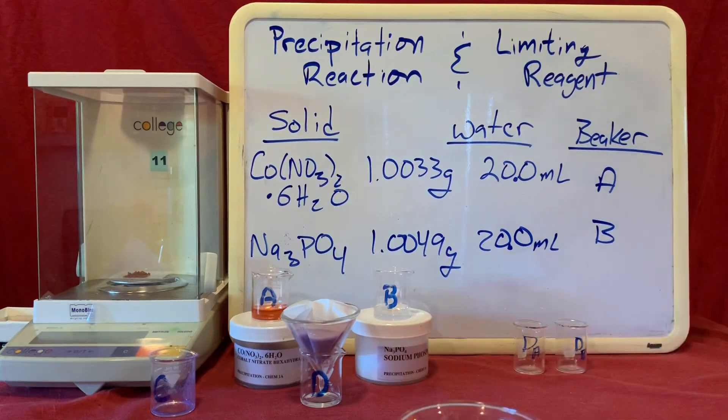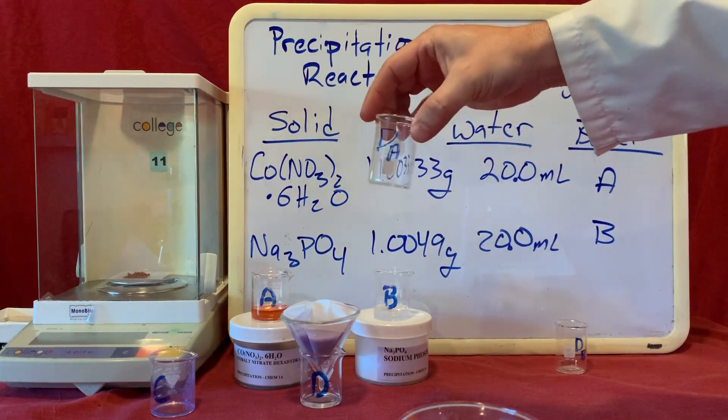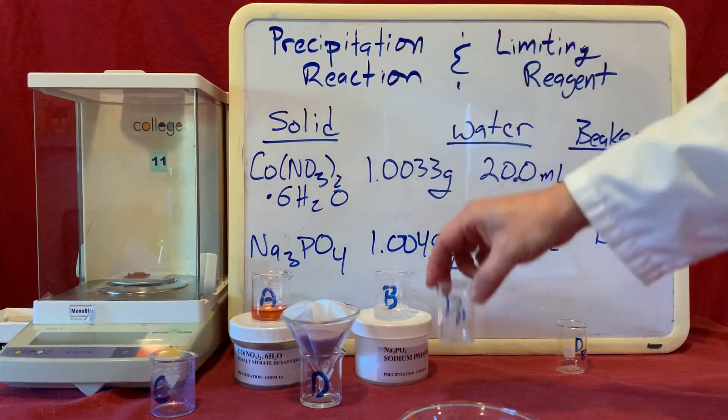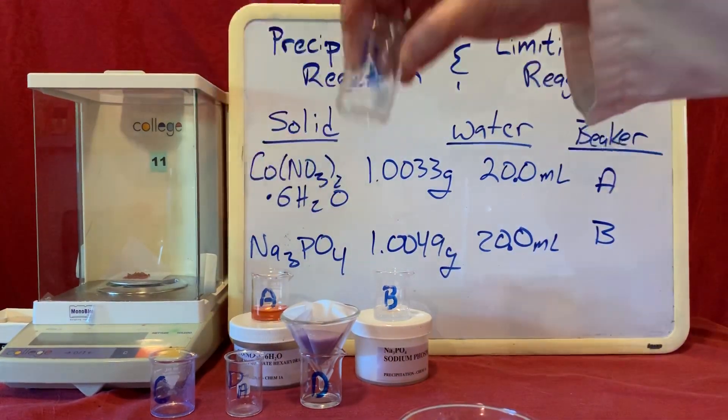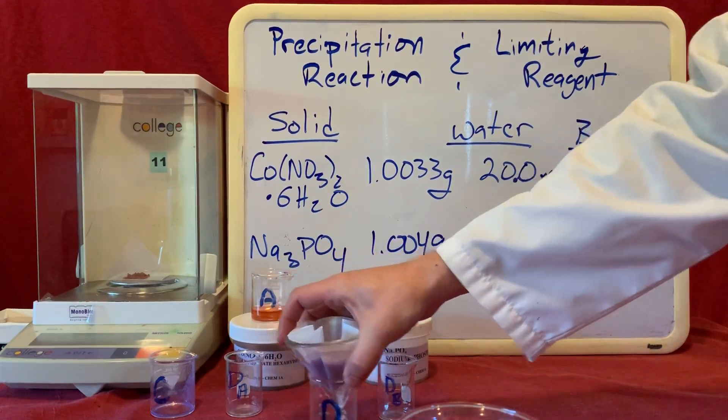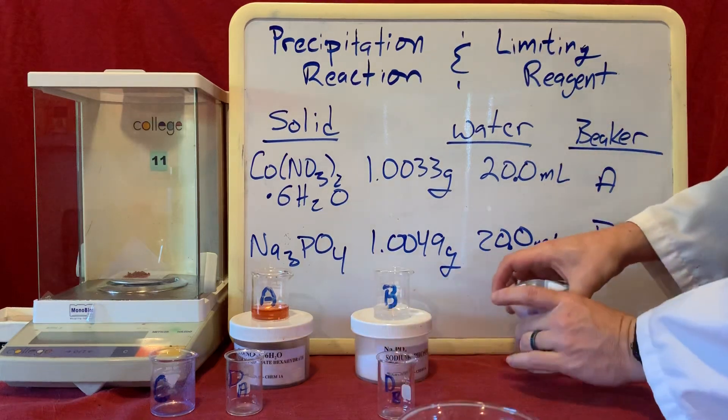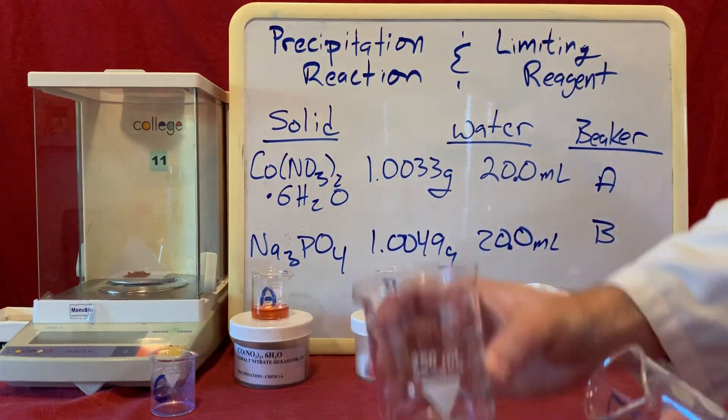Now what I want to do is I want to take this supernatant and I want to separate it into two different containers so that I can test it in order to figure out what's in it. I'm going to break this up into two different beakers which I've labeled D sub A and D sub B. I just want to mix them up and split up about 50-50.